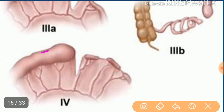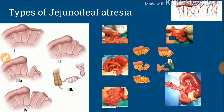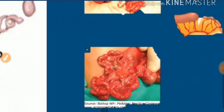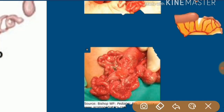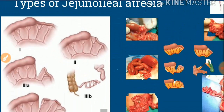Type 4 atresia is multiple atresia, where there are multiple segments of atresia — described as like sausages. The picture shows atresia at multiple points along the bowel. These are the different types: Type 1, Type 2, Type 3a, Type 3b, and Type 4 atresia.